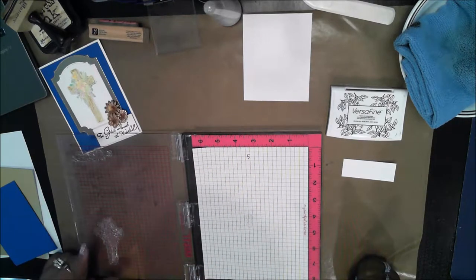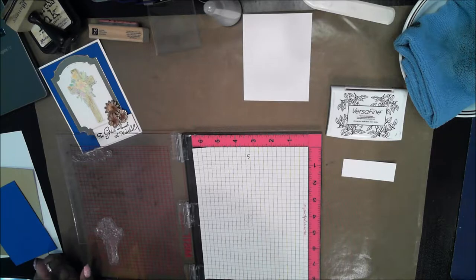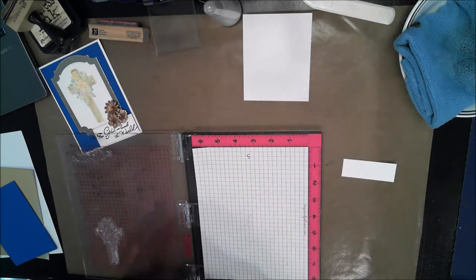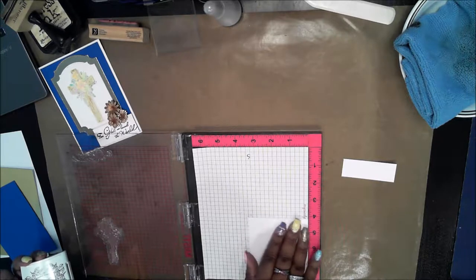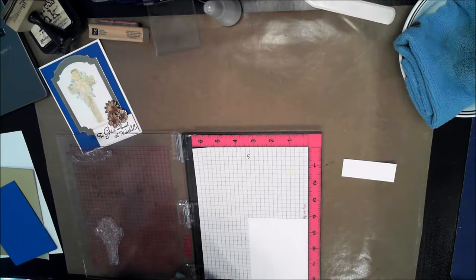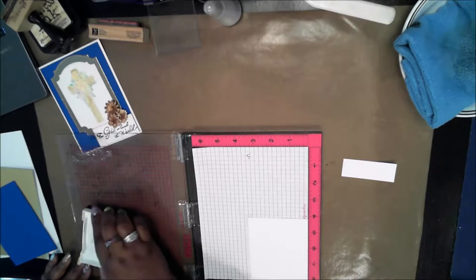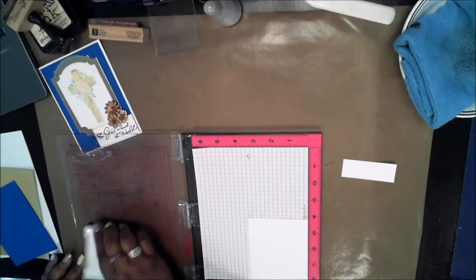As I mentioned I'm going to do this in black and not in the brown one so I have my VersaFine and I've already put the stamps onto the Misti tool where I need them to be so I'm going to ink this up.